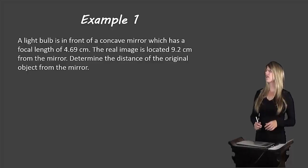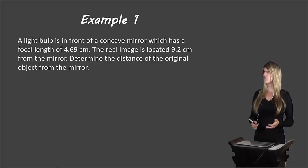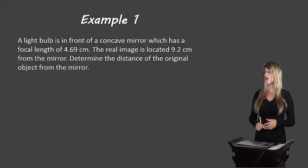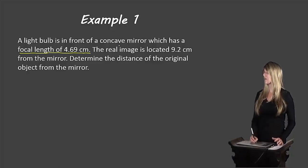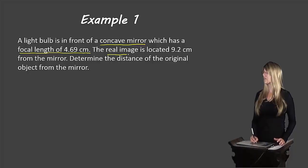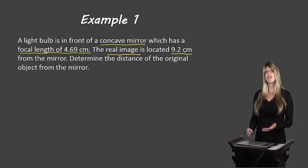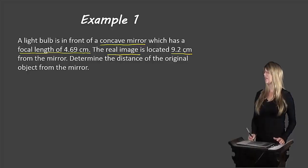A light bulb is in front of a concave mirror which has a focal length of 4.69 cm. The real image is located 9.2 cm from the mirror. We need to determine the distance of the original object from the mirror. Since it's a concave mirror, the focal length is positive: F = +4.69 cm. Since it's a real image, the image distance is positive: DI = +9.2 cm.